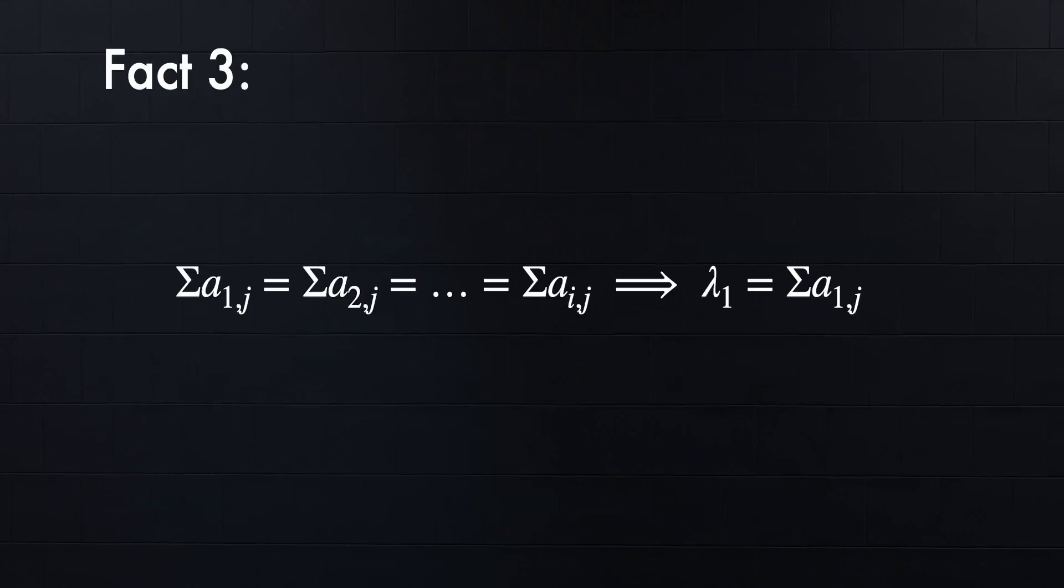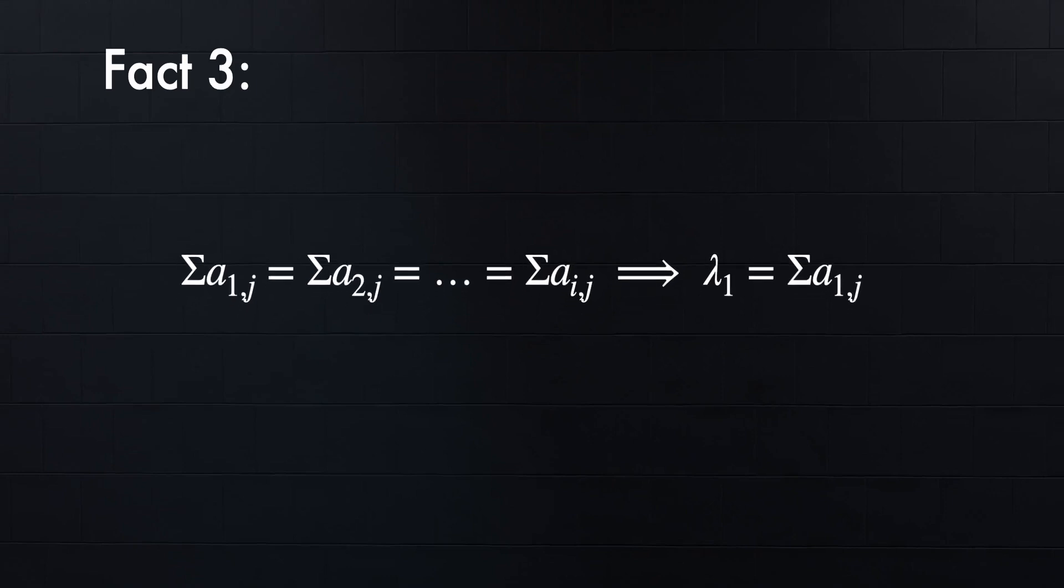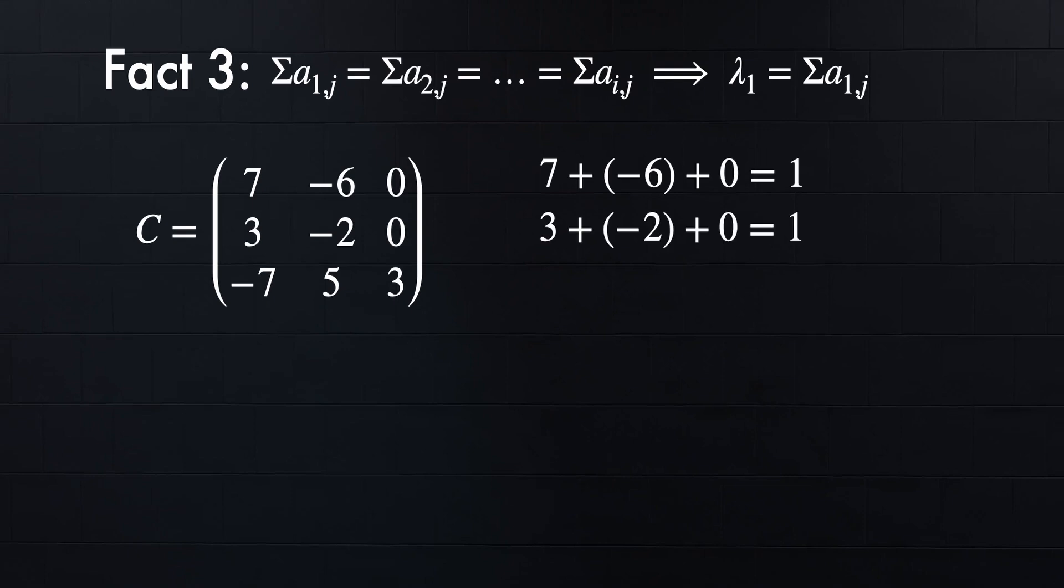Now on to Fact 3, which is basically saying that if the sum of all the numbers in one row are the same for all the rows of the matrix, that sum is one of the eigenvalues. Let's see that in action. Here we have a matrix C. If we add up the numbers in each row, we get the same number, 1, for this matrix. So one of the eigenvalues is 1.